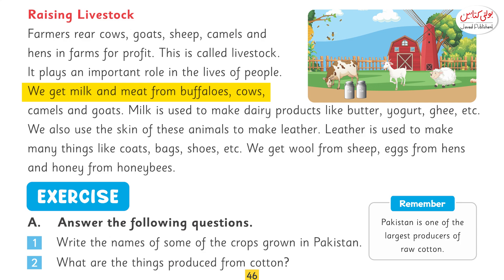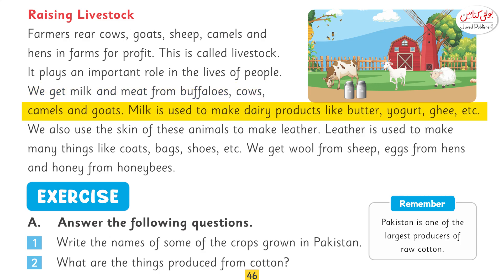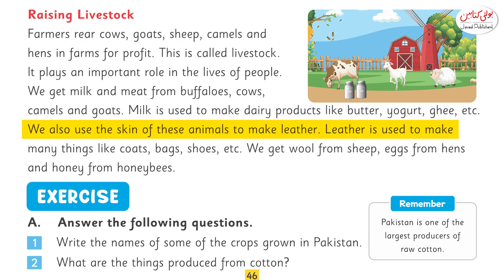We get milk and meat from buffaloes, cows, camels, and goats. Milk is used to make dairy products like butter, yogurt, ghee, etc. We also use the skin of these animals to make leather.